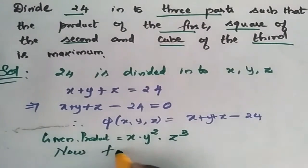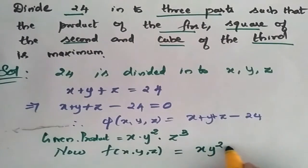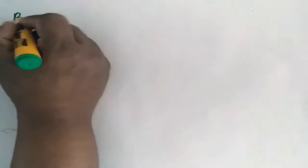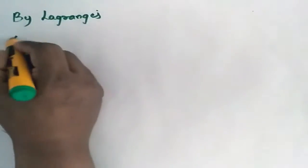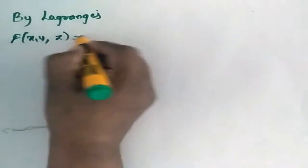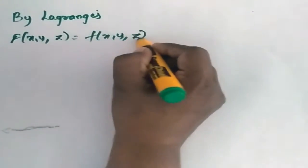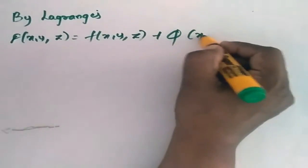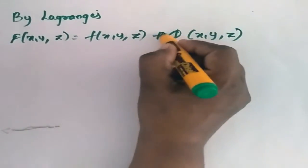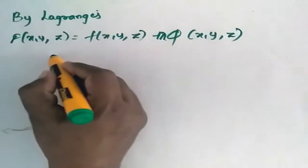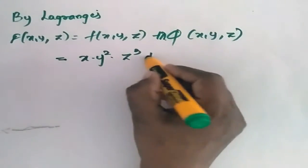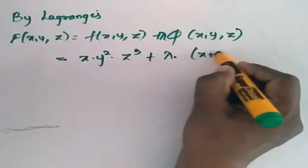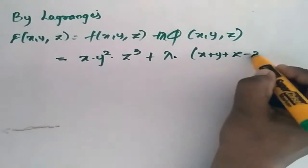Now, F of X comma Y comma Z is equal to X·Y²·Z³. By Lagrange's method, F of X, Y, Z is equal to F of X, Y, Z plus lambda into phi of X, Y, Z. This is equal to X·Y²·Z³ plus lambda into X plus Y plus Z minus 24.